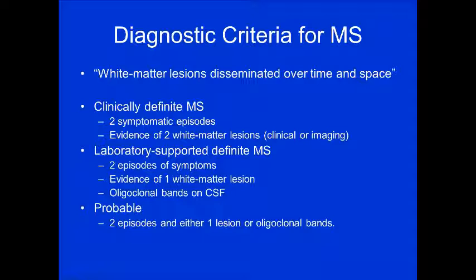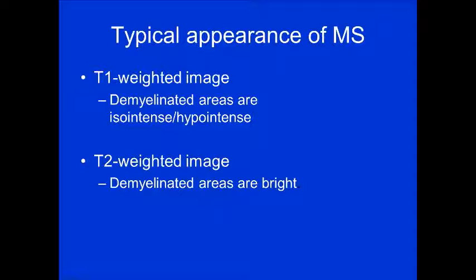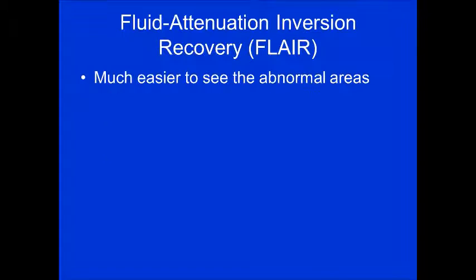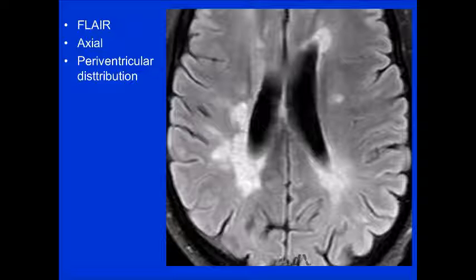Laboratory-supported MS requires two episodes of symptoms, evidence of one white matter lesion, and oligoclonal bands on CSF. Probable MS requires two episodes and either one lesion or oligoclonal bands. On T1-weighted imaging, demyelinated areas are iso- to hypointense — the black holes. On T2-weighted imaging, demyelinating areas are bright or hyperintense. The workhorse is the FLAIR sequence, which makes it much easier to see the abnormal areas in a periventricular distribution. On sagittal imaging, they show the typical Dawson's fingers pattern.